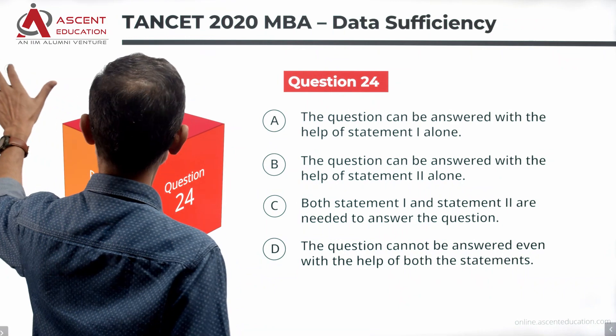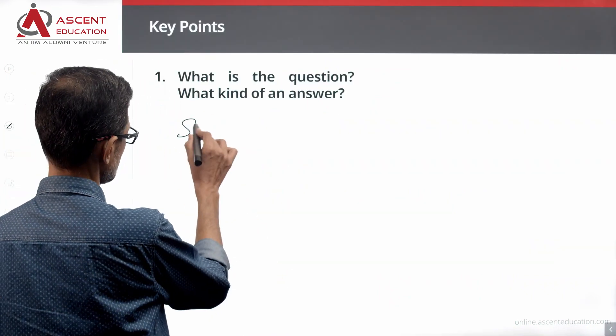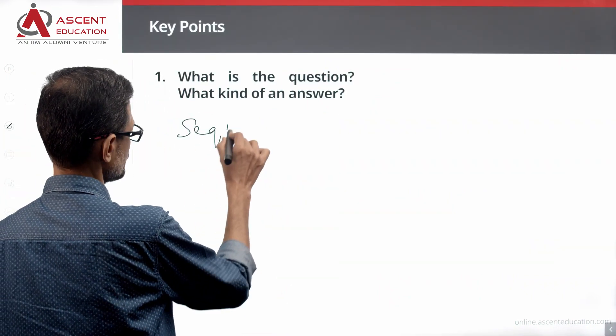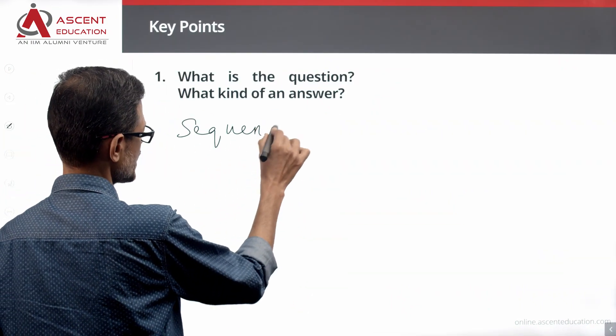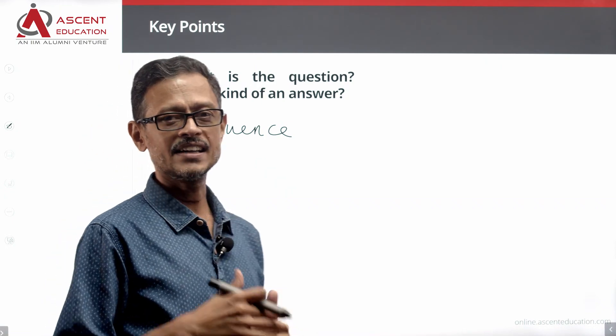What we need to do is find out the sequence — stations A, B, C, D, E in order. We need to determine what sequence the intermediate stations C, D, and E appear in.